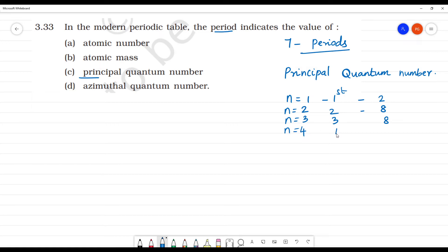But n equals 4, it belongs to fourth period and it contains 18. n is 5, fifth period and it contains 18. And n equals 6, sixth period, it contains 32 elements. Seventh period also contains 32 elements.